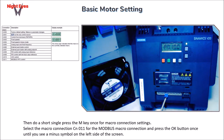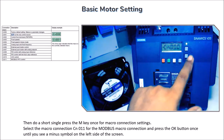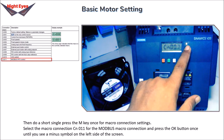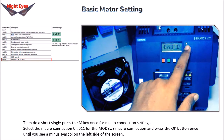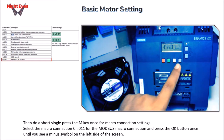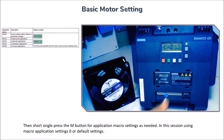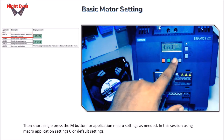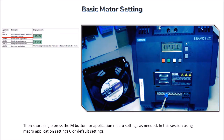Then do a short single press of the M key for macro connection settings. Select the macro connection CN011 for the Modbus macro connection and press OK until you see a minus symbol on the left side of the screen. For application macro settings, this session uses macro application setting 0, the default.